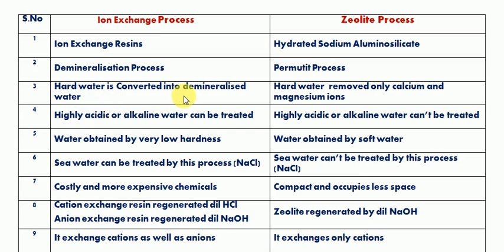In the ion exchange process, hard water is converted into demineralized water. Hot water containing all the cations and anions has them completely removed, and we get fully demineralized water, also called DM water or de-ionized water.